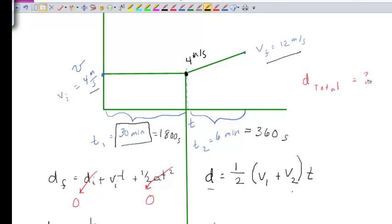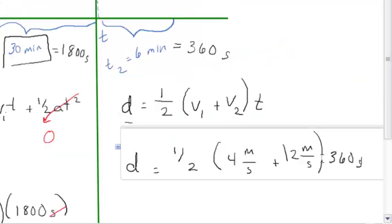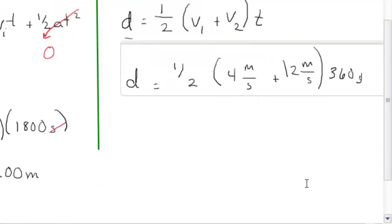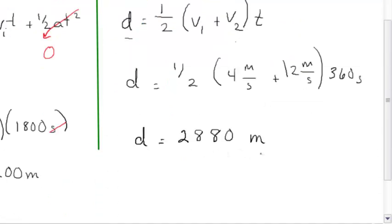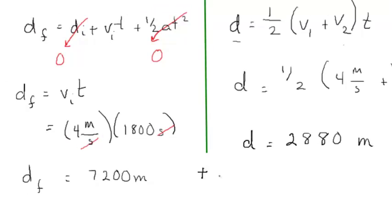So let's go ahead and plug our numbers in, and then solve the problem. So our final answer for this part, how far he goes when he's running, is 2880 meters. So to get the total distance, we just add the two together.